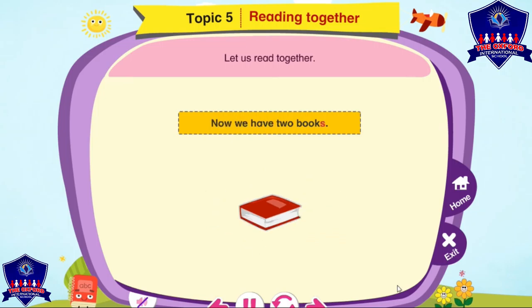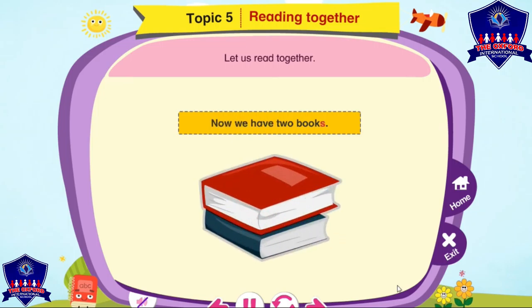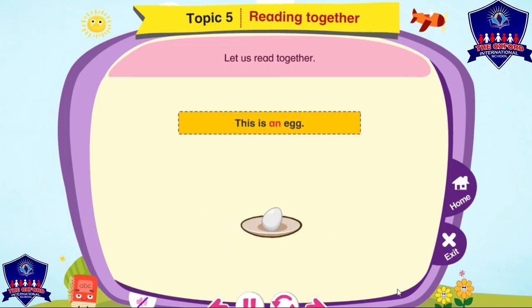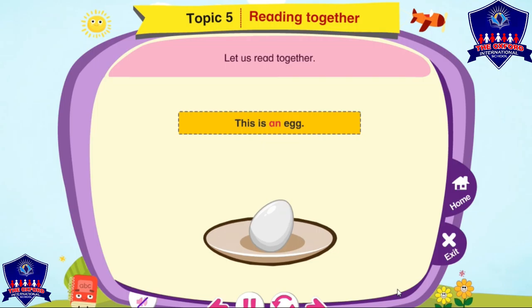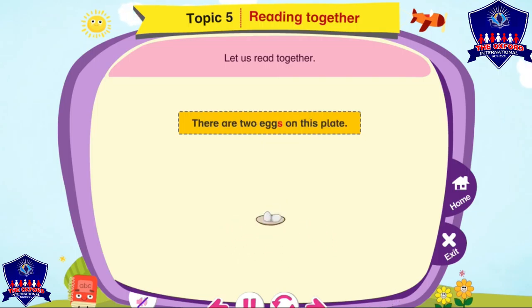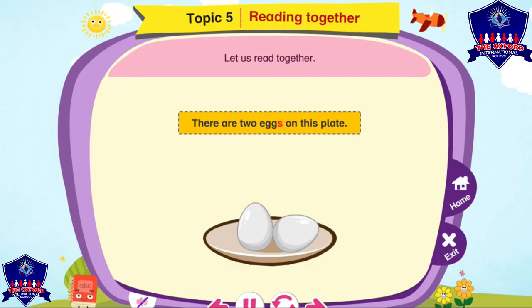This is a book. Now we have two books. This is an egg. There are two eggs on this plate.